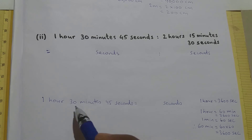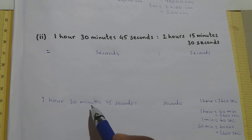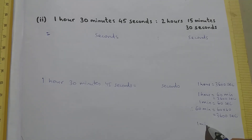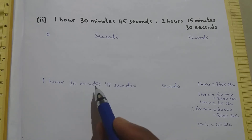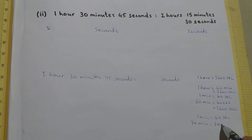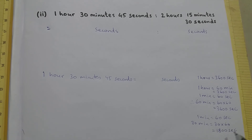Now I will convert 30 minutes into seconds. We know that 1 minute is 60 seconds. Therefore 30 minutes will be 30 × 60 = 1800 seconds. So 30 minutes is 1800 seconds.